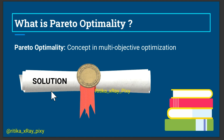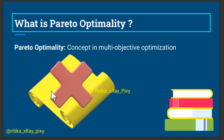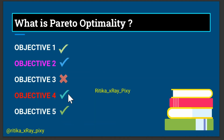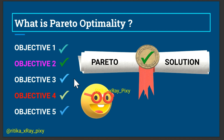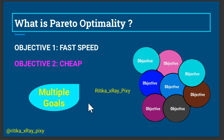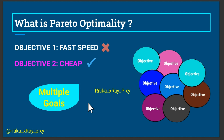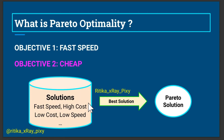A solution is considered Pareto optimal if there is no other solution that can improve one objective without worsening at least one other objective — meaning we can get the best solution without making anything worse. It is an economic situation where resources cannot be redistributed to benefit one person without harming another. The set of all such best possible solutions is known as the Pareto optimal solutions.